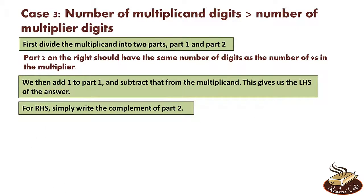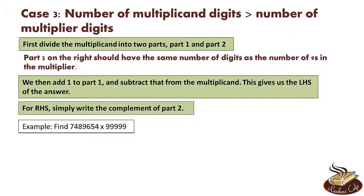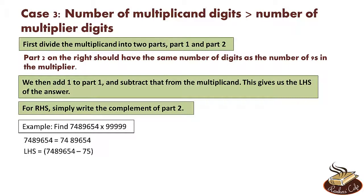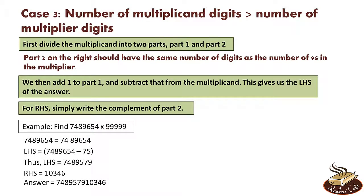Let's do one more question. Let's find 7489654 into 99999. Now 99999 has 5 9's, that is 5 digits. So we divide 7489654 into two parts such that part 2, that is the part on the RHS, has 5 digits. So we write 7489654 as shown. Now add 1 to part 1. So part 1 becomes 74 plus 1, that is 75. Now subtract 75 from the multiplicand which gives us the LHS. So LHS is 7489654 minus 75, which is equal to 7489579. Now RHS is the complement of part 2. Complement of 89654 is 10346. So the answer is 7489579 10346.